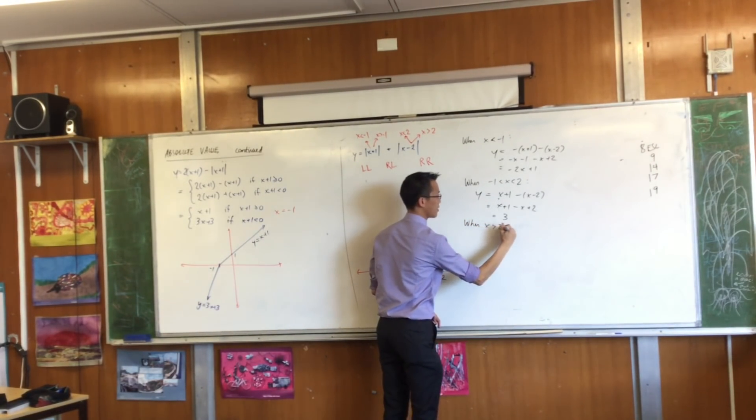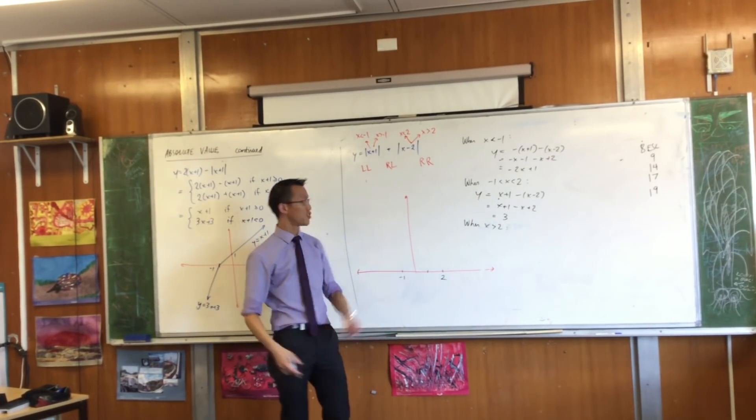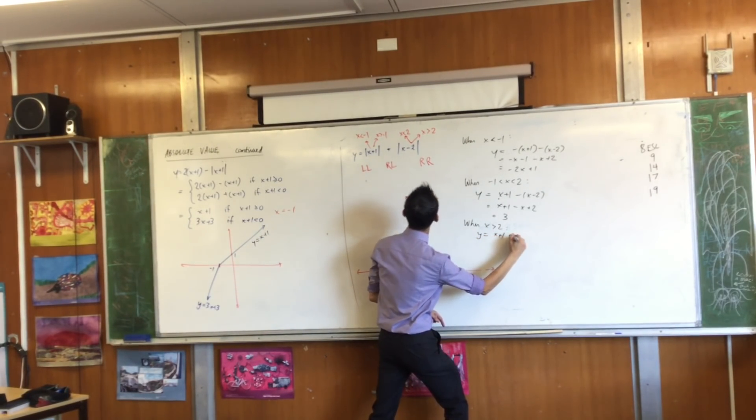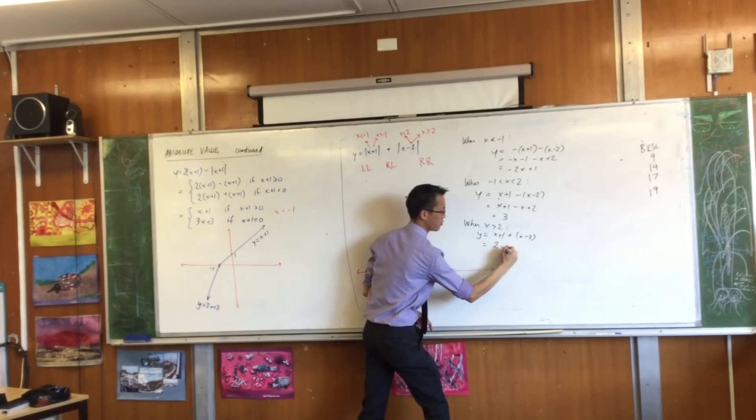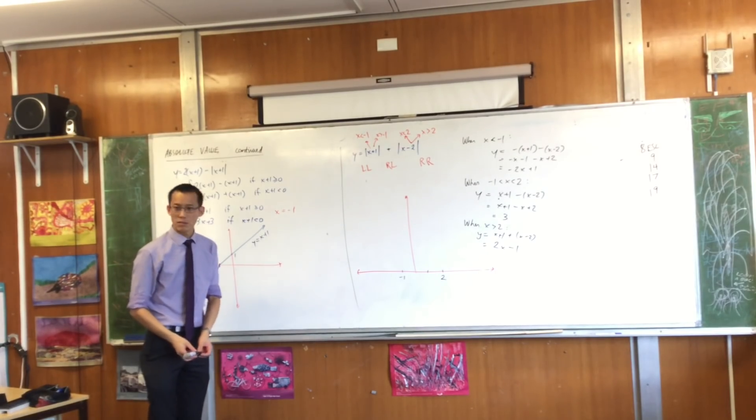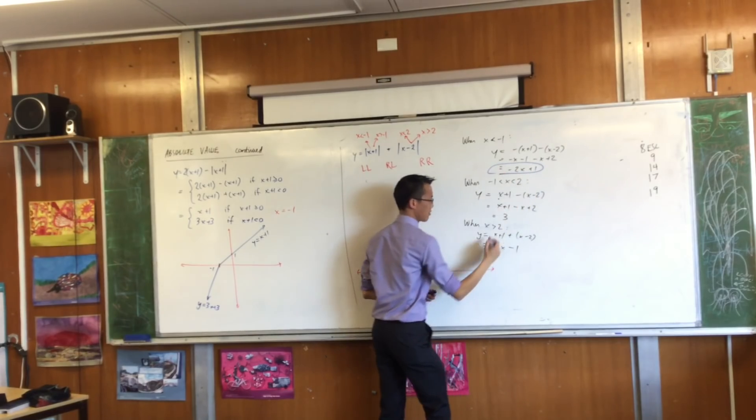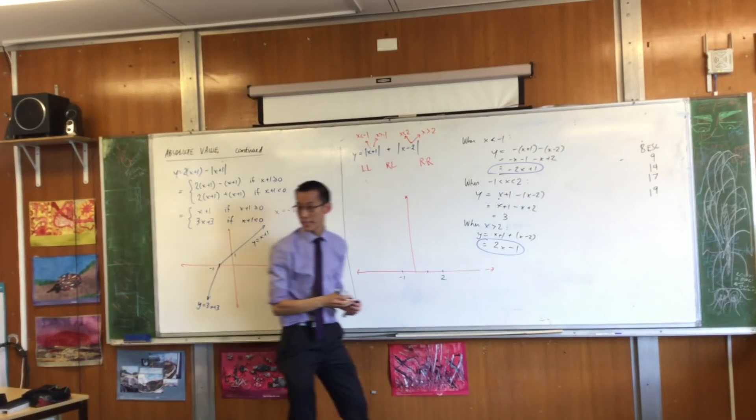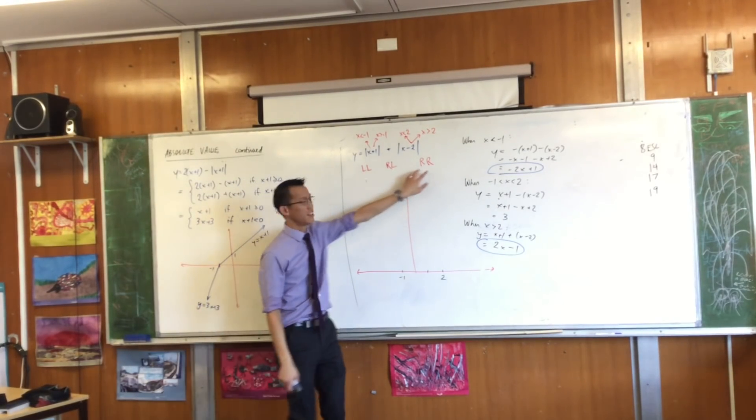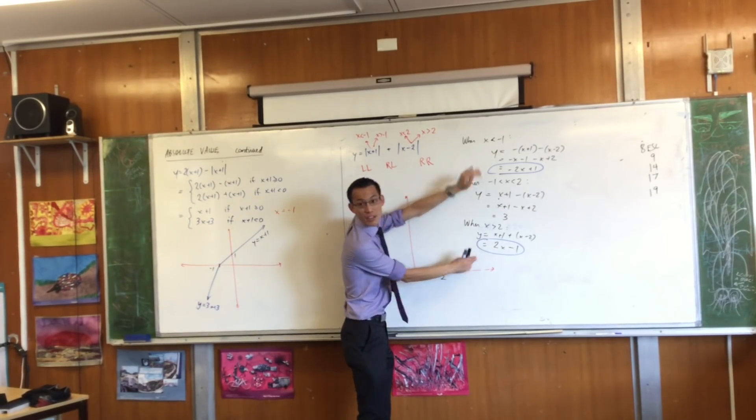Now we've got our last one, when x is greater than 2. Now at last, everything is just the positive version, the right version. So I'm going to say y equals x plus 1 plus x minus 2. Are you happy with that? Which, by the way, doesn't it look suspicious? Doesn't that got a connection? Those two guys, right? They are exact opposites of each other. Of course they are, because look, you went from left-left to right-right. That's the negative versions of both, the positive versions of both. No surprise they're exactly opposite.